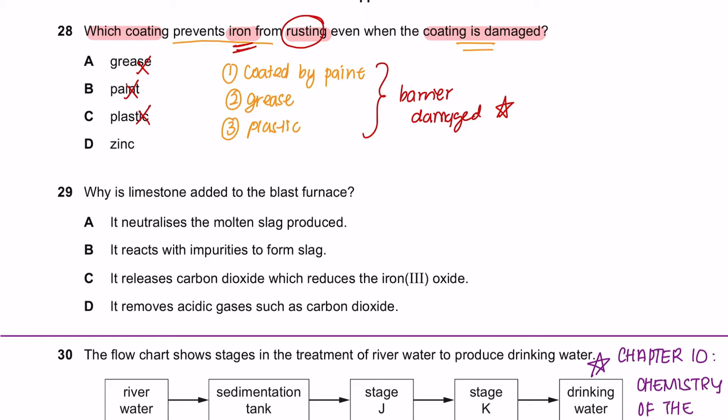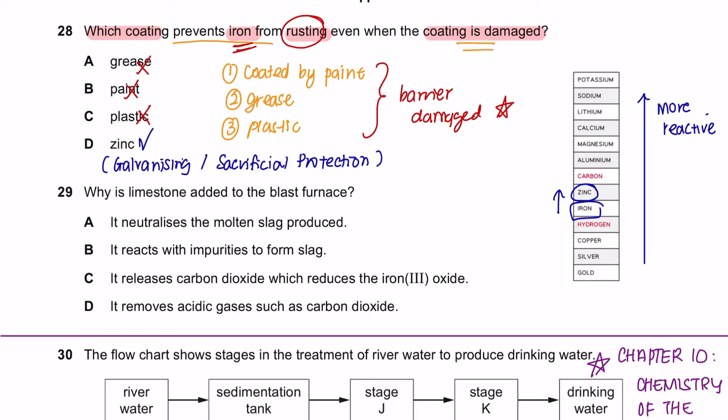So these options are not the answer. So what we can do is use a more reactive metal than iron, for example zinc, to prevent the iron from rusting. This method is identified as galvanizing or sacrificial protection.